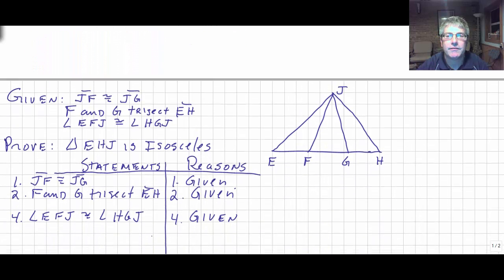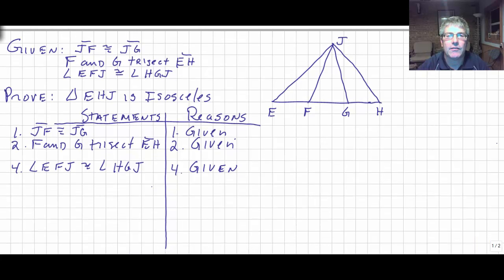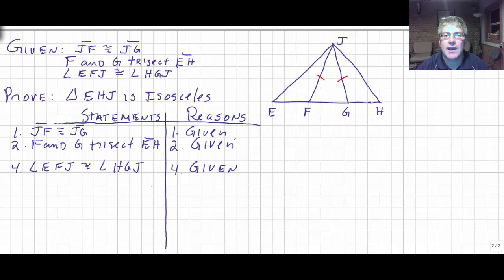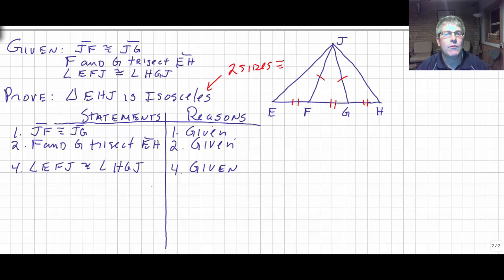Let's take a look at a sample proof after we've classified our triangles. We're given that JF is congruent to JG, and F and G trisect EH — so EF, GH, and FG are all congruent. We want to prove that triangle EHJ is isosceles. To know it's isosceles, we need to get two sides congruent.